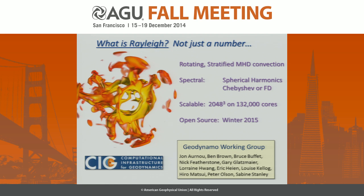So if you find anything wrong with my talk, just email one of them. What I'd like to talk about is a code we've now named Rayleigh, just so that you know it has something to do with convection. It has been developed for convection in a sphere for rotating stratified MHD convection, under the anelastic or Boussinesq approximations.